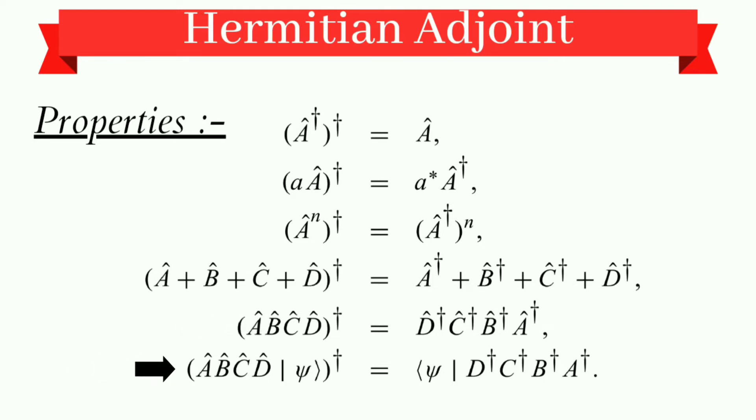Similarly, if we operate four operators within ket psi and then take its adjoint, like A, B, C, D ket psi whole to the power dagger, it will give us bra psi. Similarly, we get a reverse series like D dagger, C dagger, B dagger, and A dagger. What is happening here? The ket psi is changing into the bra and the series is getting reversed. So pause this video here and look at all the properties by yourself. It is not that typical to understand.